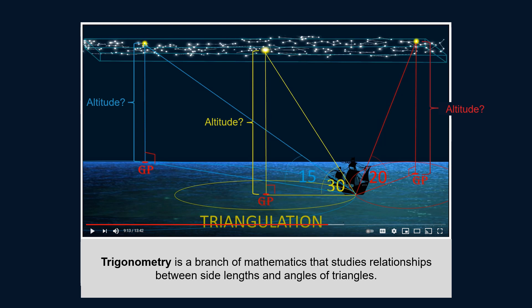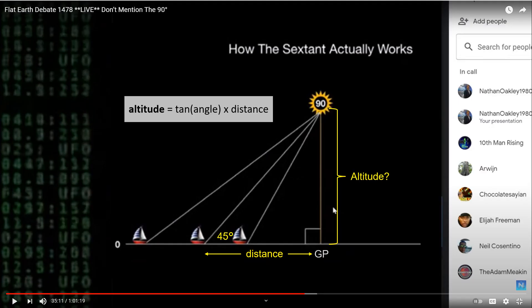All you would need to know is the altitude of the celestial object that you are targeting, and then you could use high school trigonometry. And this is a very simple calculation. The altitude is equal to the tangent of the observed angle times the distance from the ground position to your position.